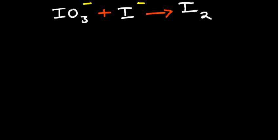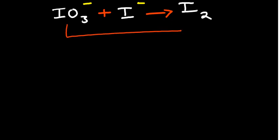Now look at this equation — if you try to observe what we have, you won't be able to balance it by observation. For example, we can see that we don't have even oxygen on the right hand side. So we use what we call the ion-electron method, where we need to split the reaction into half reactions. We can see that we only have a single product.